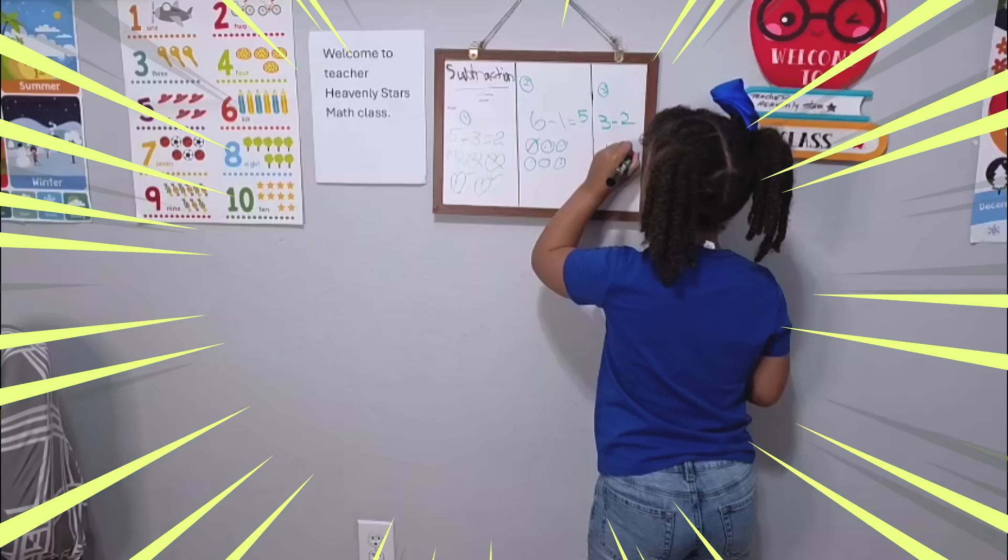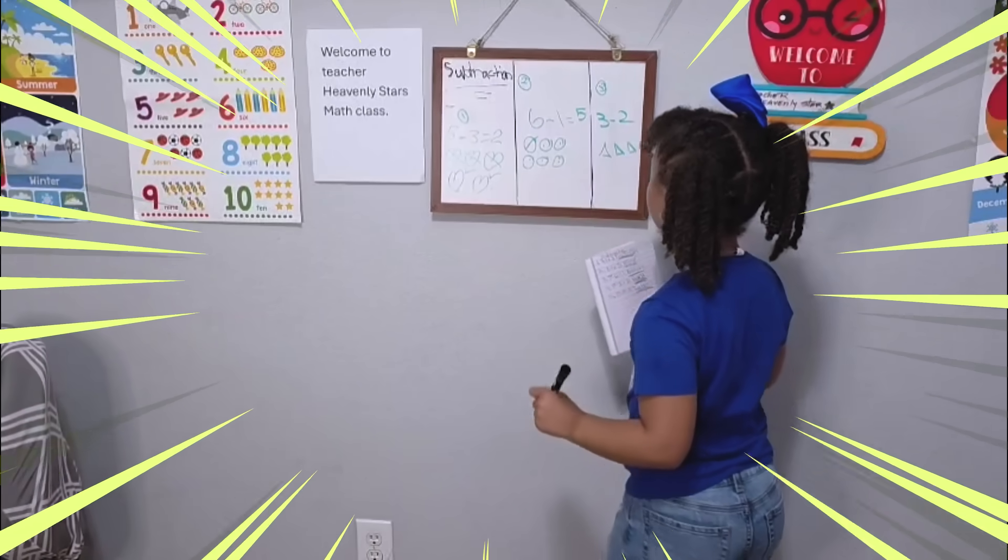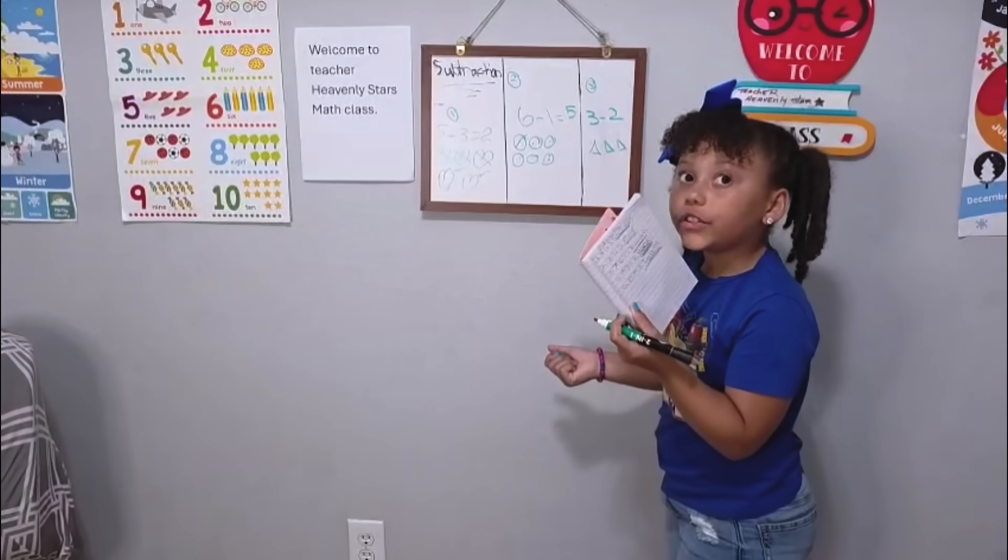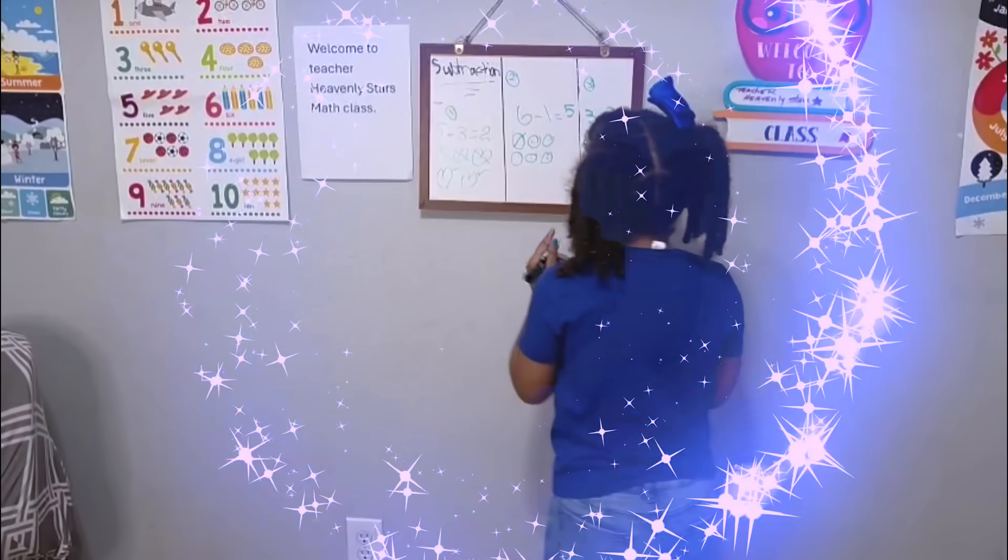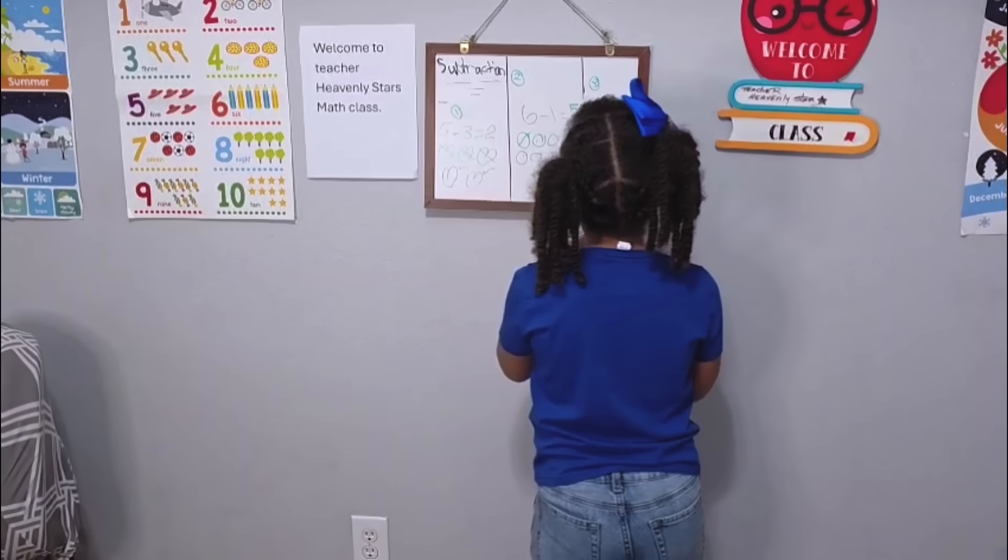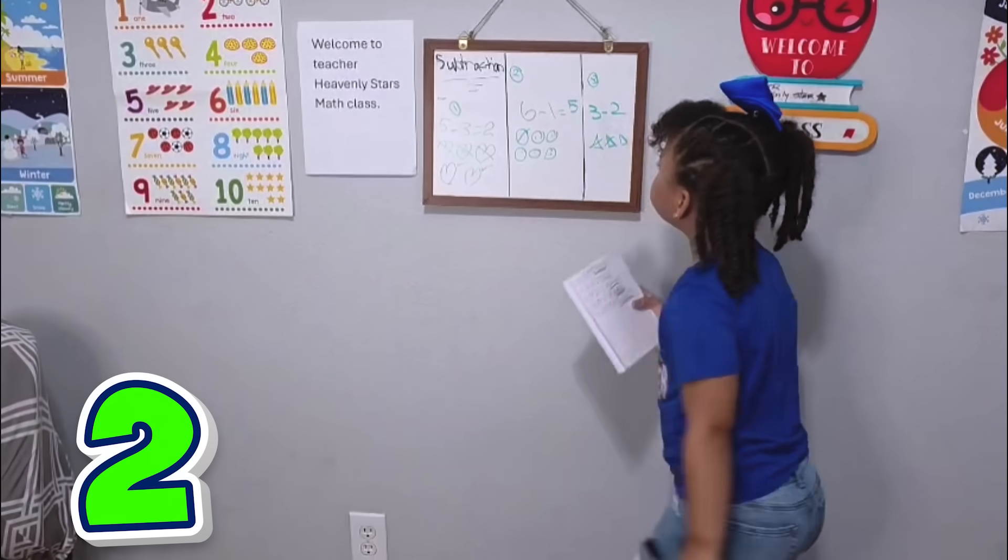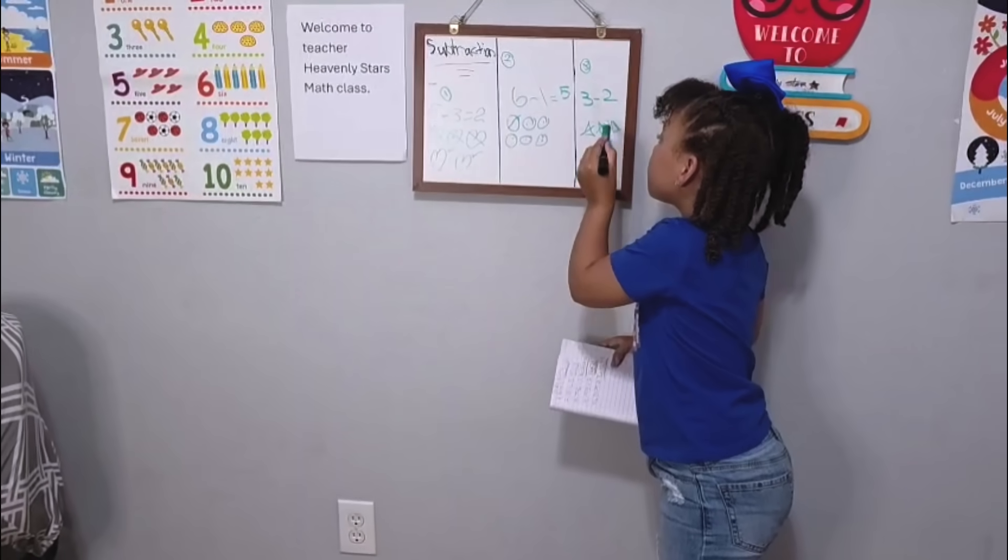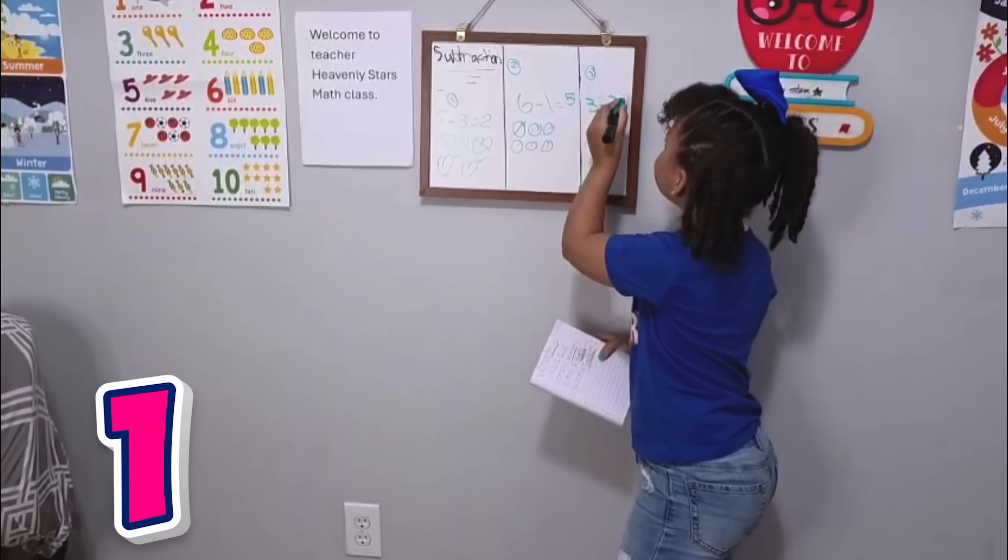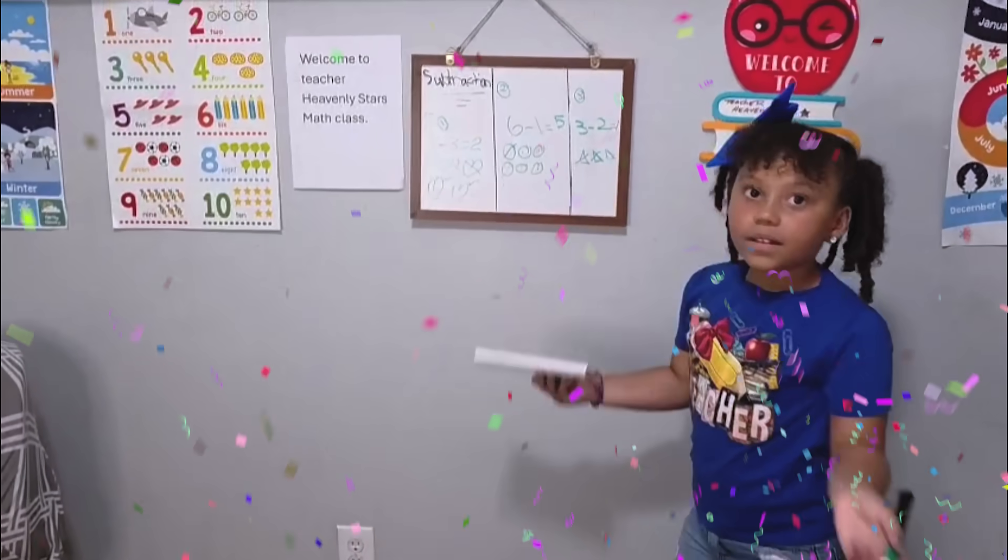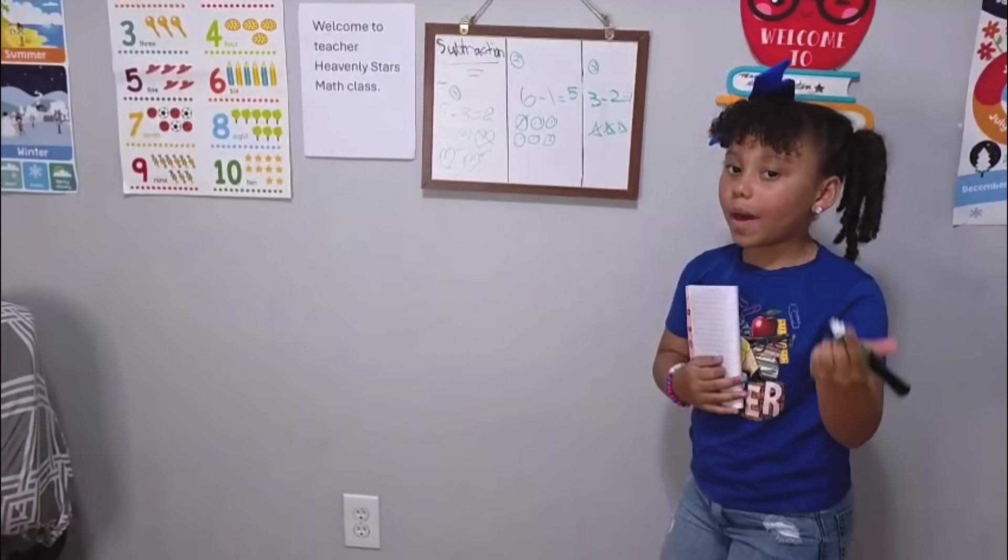I mean, I have three triangles and then I gave my friend Elijah two. How many do we have left? One. See, we'll be right back.